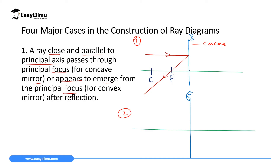For a convex mirror, the reflecting surface bends outward. We set F and C behind the mirror, measuring from the pole. If we have a ray which is close and parallel to the principal axis, it will be reflected but will appear as if it was coming from point F behind the mirror.